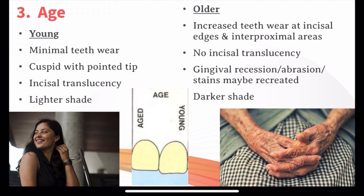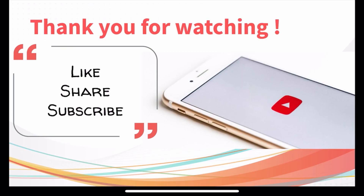In case of older patients, you can give increased teeth wear at the incisal edges as well as interproximal areas. There is no need for incisal translucency. You can also recreate stains, gingival recession, or abrasion, and you can opt for a darker shade. That was all about the dendogenic concept or SPA factor.